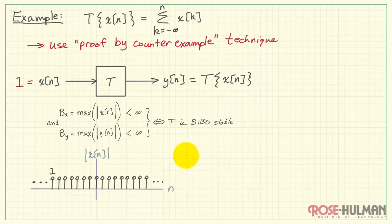What we're going to do is assume a specific input for x, which is all ones. This is ones for all time. Clearly, this is a bounded input, b_x equals 1.